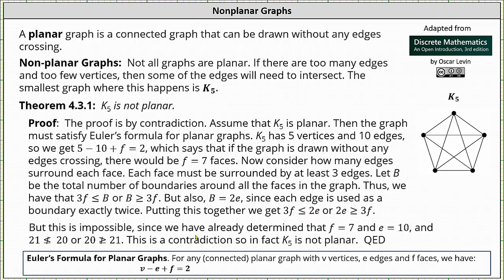But this is impossible since we already determined that f is equal to 7 and e is equal to 10. Notice when f is equal to 7, 3 times f is 21. And when e is equal to 10, 2 times e is equal to 20. And 21 is not less than or equal to 20 or 20 is not greater than or equal to 21. This is a contradiction. So in fact, K5 is not planar.